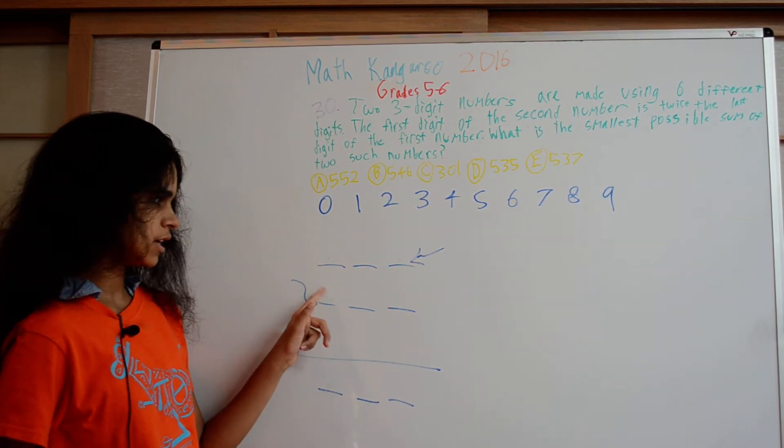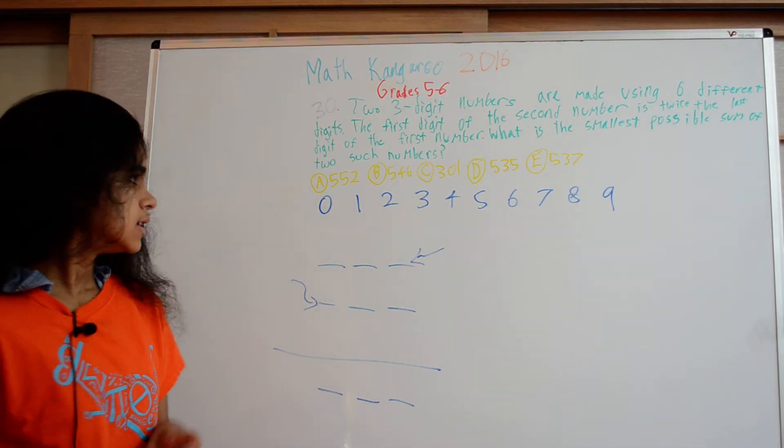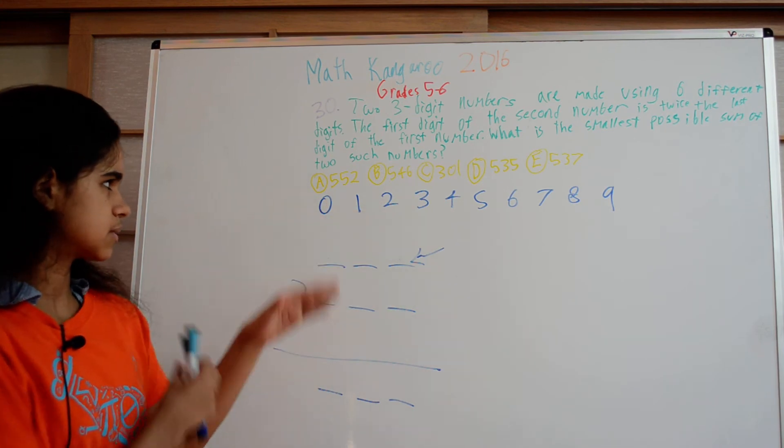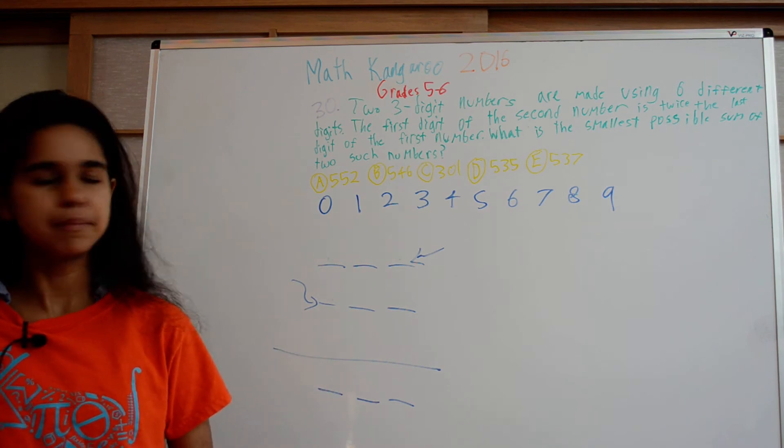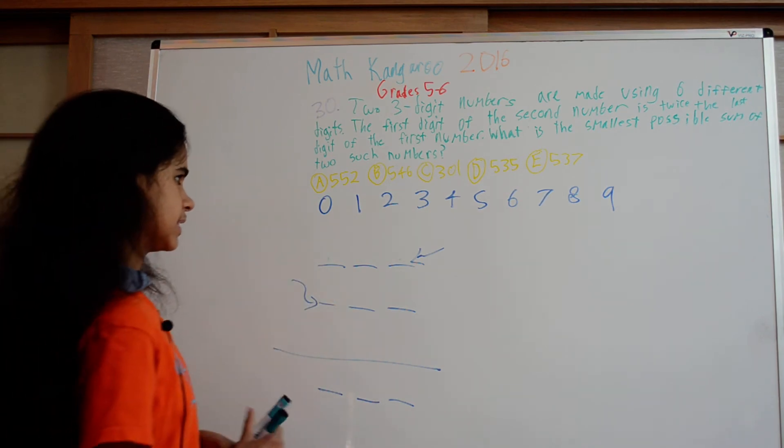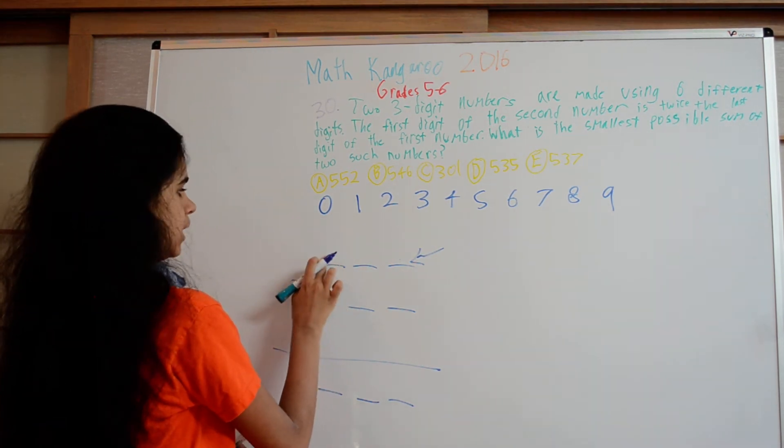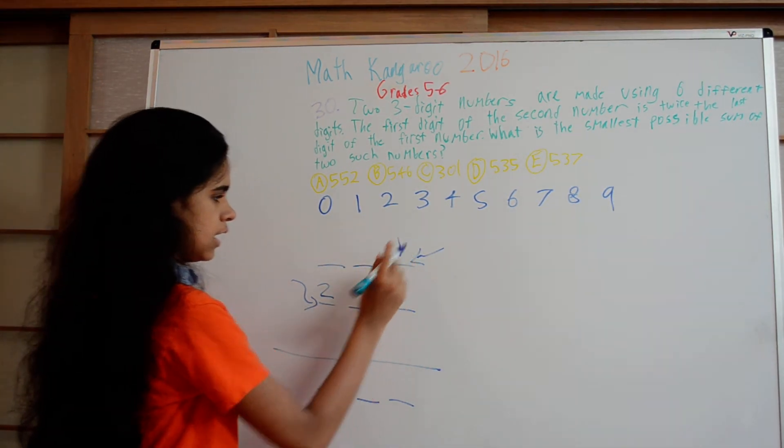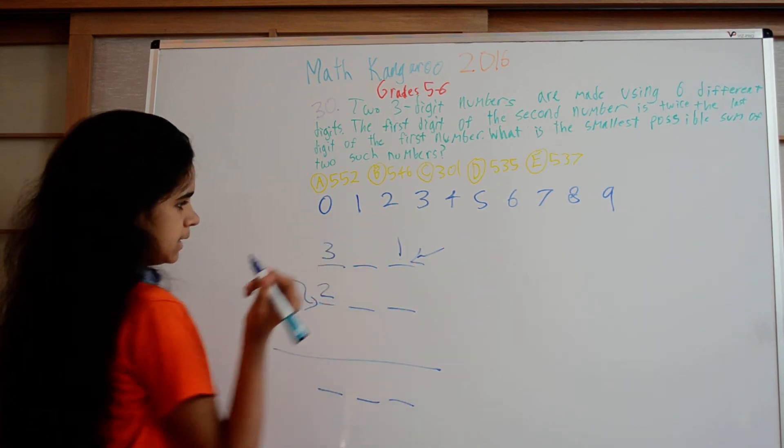We know whatever goes here has to be an even number because it's two times whatever goes there. What are the smallest even numbers? Well, two is the smallest. We can't use zero because that would be repeating a number. So we could put two here and see what happens. If we put two here, we would want to put one there, but we can't. We have to put one there to make this number two times that number.